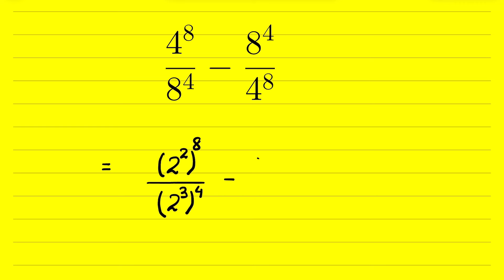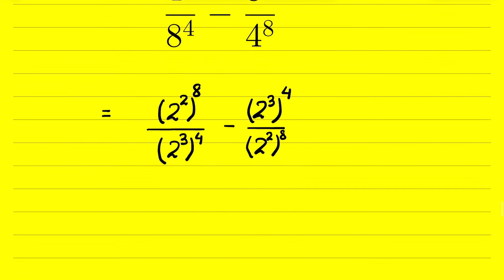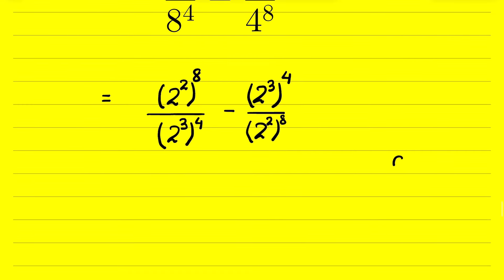Similarly, 8 as 2 raised to the power 3 whole raised to the power 4, and 4 raised to the power 8 as 2 raised to the power 2 whole raised to the power 8. Now we use the identity: if a raised to the power m, whole raised to the power n, this equals a raised to the power m times n.